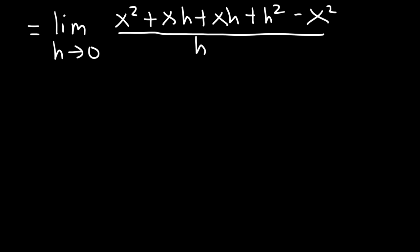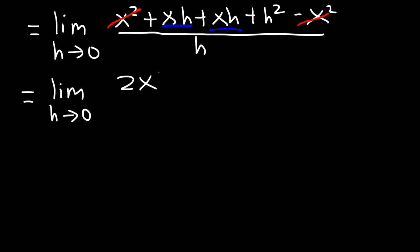Now let's combine like terms and cancel. x squared and negative x squared add up to 0. And xh plus xh is 2xh. So we have the limit as h approaches 0 for 2xh plus h squared, divided by h.